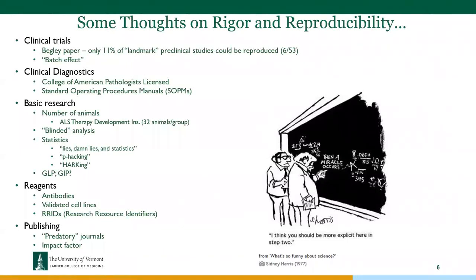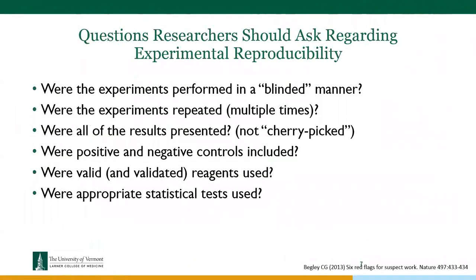Journals also have a role to play, including the issue of predatory journals, where impact factor plays a role. Begley wrote a commentary with questions researchers should ask regarding experimental reproducibility: Were experiments performed in a blinded manner? Were experiments repeated multiple times? Were all results presented, not just cherry-picked? Were positive and negative controls included? Were valid and validated reagents used? Were appropriate statistical tests used? We as scientists assume the answers are all yes, but if we really get into the weeds, we find that's often not the case.